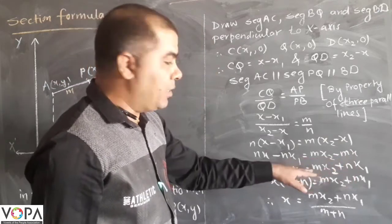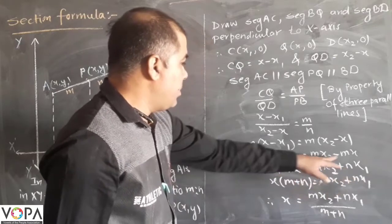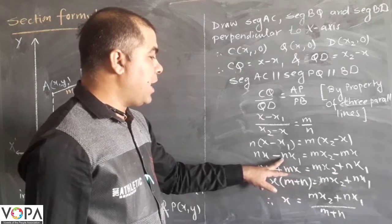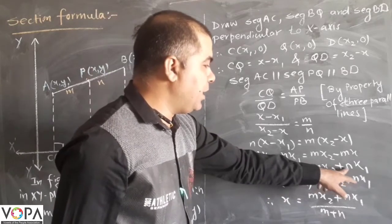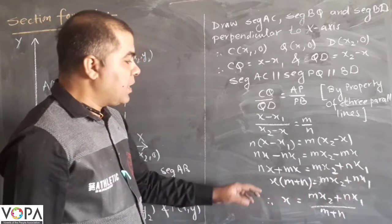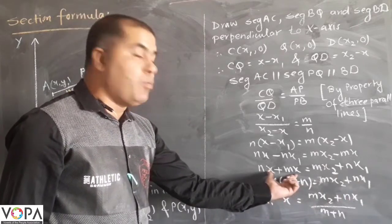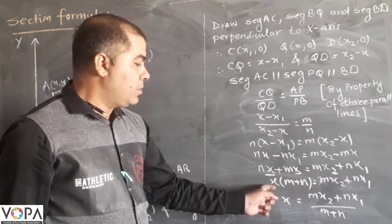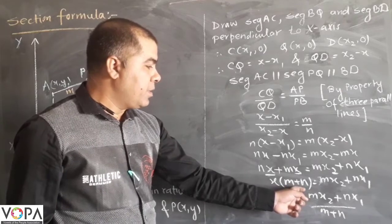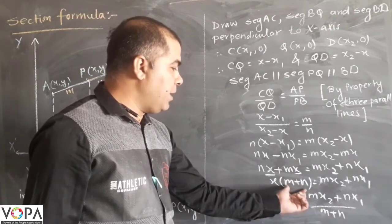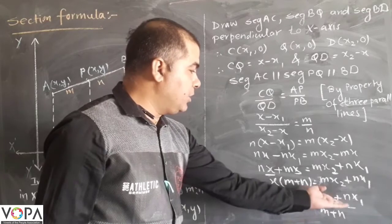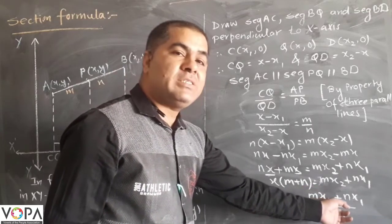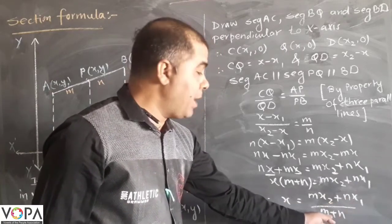Now moving the terms: MX comes here as positive MX plus NX, and it will be MX2 plus NX1. X is common in both terms, take it out and it will remain M plus N. Now bring M plus N to the other side of the equation: X equals MX2 plus NX1 upon M plus N.